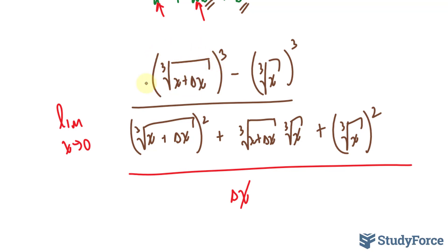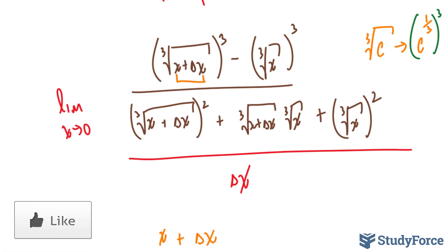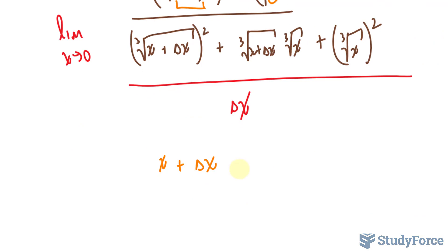Take, for example, this expression. We have the cube root of x plus delta x raised to the power of 3. Remember what cube root is. So let's say we have the cube root of some random letter, let's call it c. This is the same thing as saying c to the power of a third. So we have c to the power of a third raised to a power of 3. And according to the exponent rules, you multiply the exponents, and you end up with c to the power of 1. So technically, in our case, we're ending up with x plus delta x. The cube root and the cube cancel each other out. And the same logic applies here. We end up with only x. Minus x.